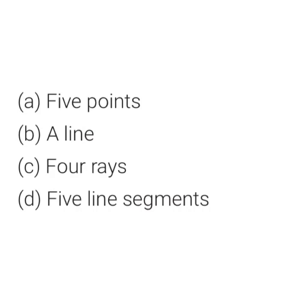What is a point? A point is a dot which determines a location. What is a line? A line has no end points — it can be extended from either of its ends. What is a line segment? A line segment has 2 end points and cannot be extended from any of its end points.